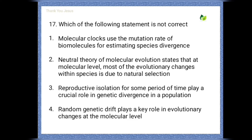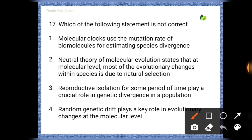Next question: Which of the following statements is NOT correct? Options include: molecular clocks use the mutation rate of biomolecules for estimating species divergence; neutral theory of molecular evolution states that most evolutionary changes within species is due to natural selection; reproductive isolation plays a crucial role in genetic divergence; random genetic drift plays a key role in evolutionary changes at the molecular level. The wrong option is the second one.